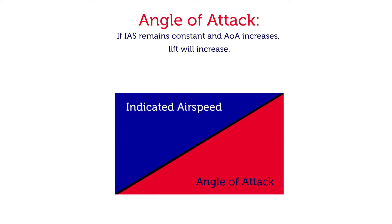Highlighted in blue is the indicated airspeed, and highlighted in red is the angle of attack. As the airspeed decreases towards the top right-hand corner of the square, the angle of attack starts to increase. Travelling down to the left-hand side, indicated airspeed has increased and the angle of attack has decreased. As our indicated airspeed increases, we're generating lift as a result of airspeed as opposed to angle of attack.